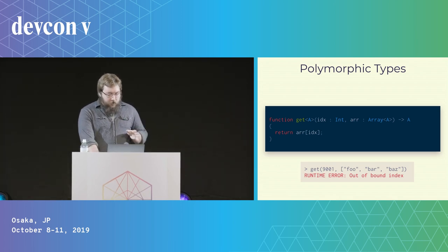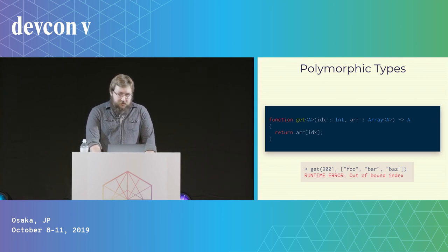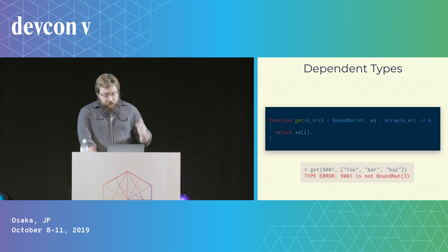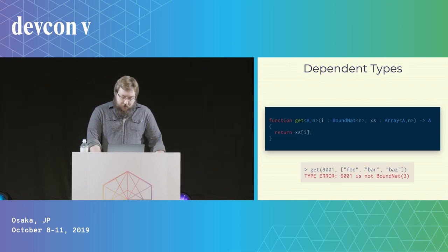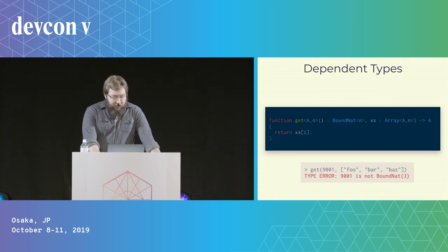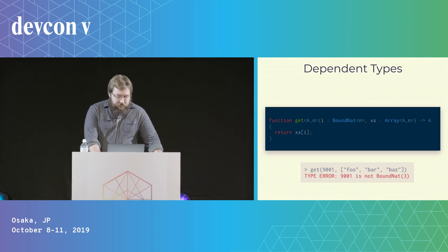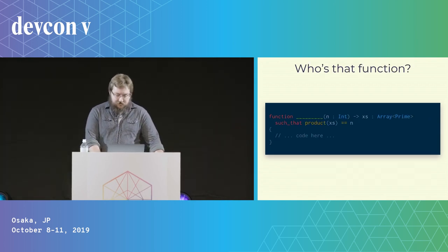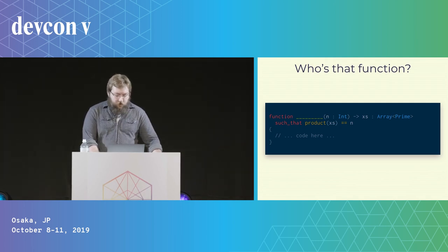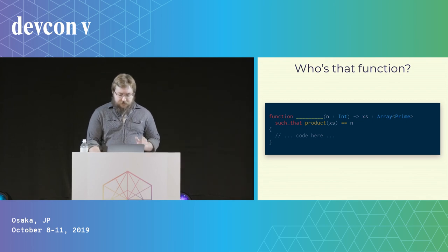If we want the compiler to warn us if our index is bigger than our array length, we're going to need types that depend not only on other types, but on normal values. Here we have a type-level number N that tells the compiler how long the array is. Just like type parameter A tells us what's in the array, N is a type-level value that lets us enforce that our index has to be between 0 and N minus 1. These values in dependent types don't have to be constants — they can be the results of computations. This lets us constrain the function so much that we can often guess what the implementation has to be just from its shape.